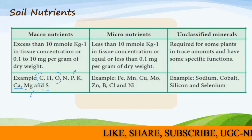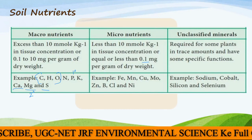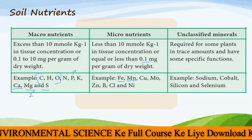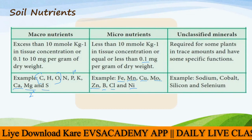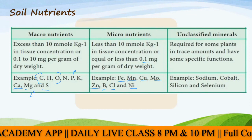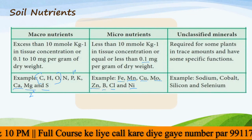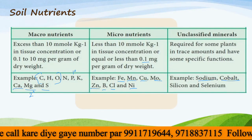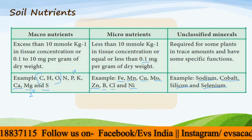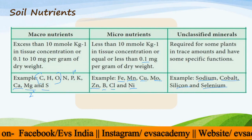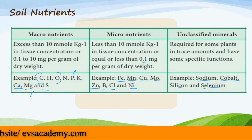Then we have micronutrients - less than 10 millimoles per kg in tissue concentration, or equal to or less than 0.1 milligrams per gram of dry weight of the plant. Examples include iron, manganese, copper, zinc, molybdenum, boron, chlorine, and nickel. Then we have unclassified minerals, required for some plants in trace amounts with specific functions - for example, sodium, cobalt, silicon, and selenium. Plants cannot survive without them, but their role and functions are very specific. Very trace amounts of these minerals are required.